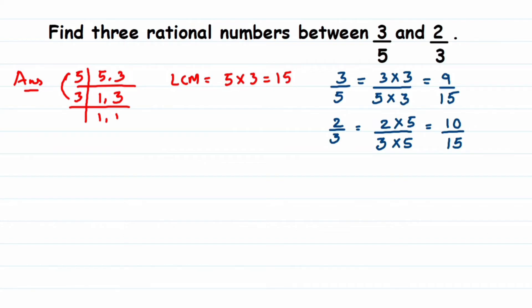Here they are asking for three rational numbers, so three means I will multiply by four. Whatever count is asked — for example, if three numbers are asked, multiply by four (one more than three). If six rational numbers are asked, multiply by seven. This way we get exactly the required rational numbers. You can also multiply by any number greater than four — it's not strictly necessary to use exactly four.